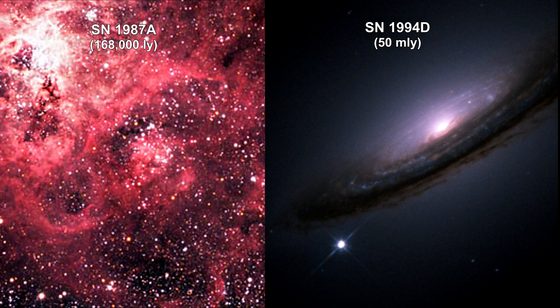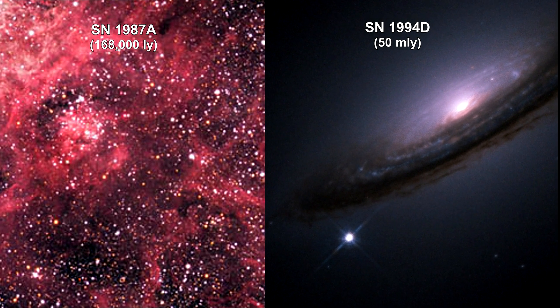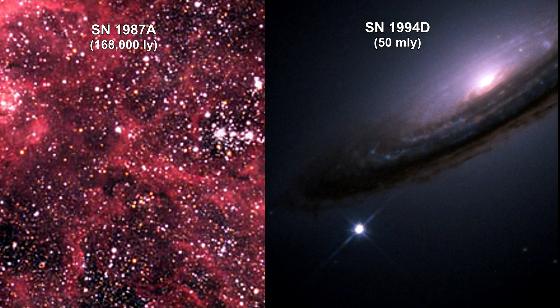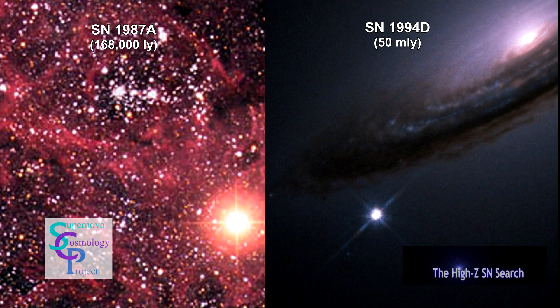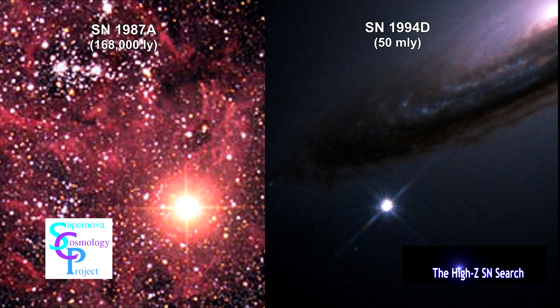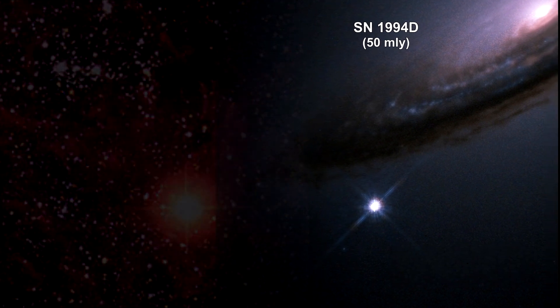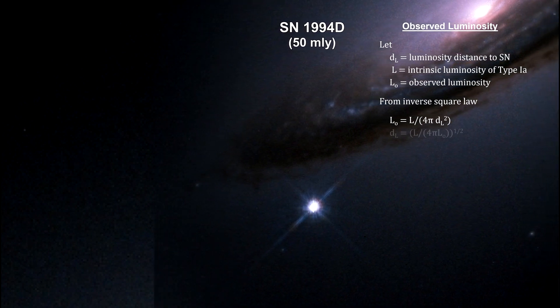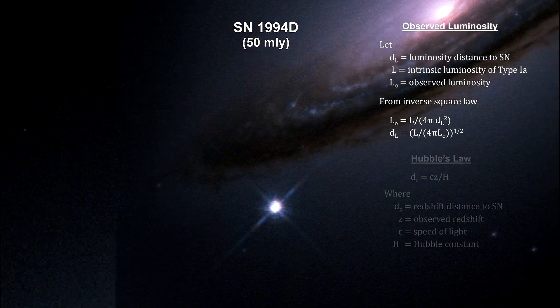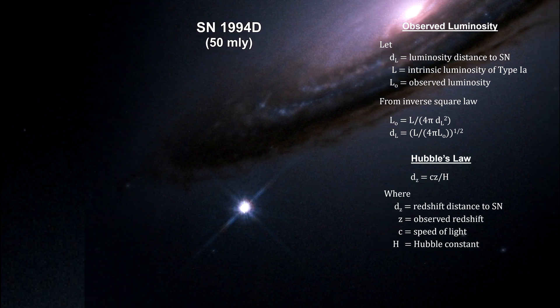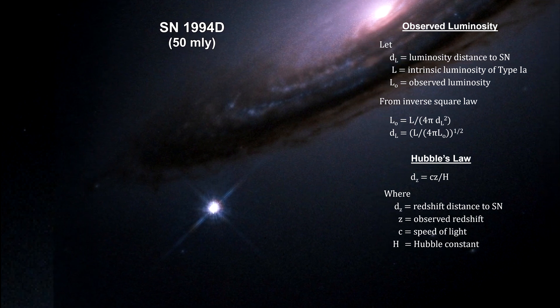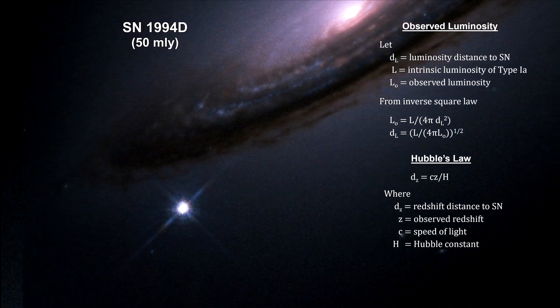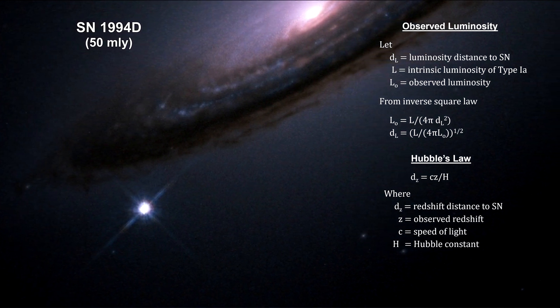After Hubble discovered the universe was expanding, it was assumed that it started off with a tremendous expansion rate, and because of the gravitational attraction of all the matter in the universe, the expansion would be slowing down. Two major efforts were started in the late 1990s to prove that the universe's expansion was decelerating. Both groups used distant Type Ia supernovae as their standard candles. Supernovae provide a luminosity reading that enables us to determine their distance via the inverse square law. This distance is called the luminosity distance. Type Ia supernovae also provide a redshift reading that gives us the distance via Hubble's law. Luminosity and redshift combined can tell us if the universe's expansion rate is constant, decelerating, or accelerating.